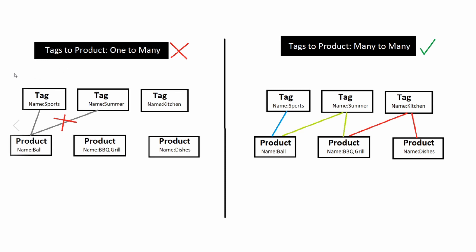Tags create better search functionality and make it easier to understand what a product is. We have three different tags — this is its own table — and products is its own table. If we had a ball in the store and wanted to reference 'sports' as a tag, we can do that. But the problem is, if this were a one-to-many relationship, we couldn't also add 'summer' as a tag, even though a ball could be related to outdoor summer events. We can only give it one tag, so the solution is to create a many-to-many relationship.